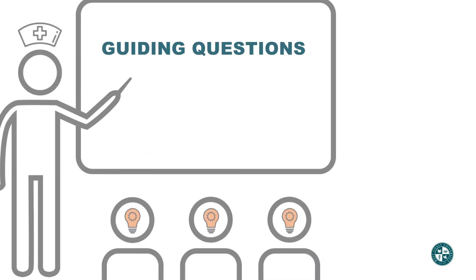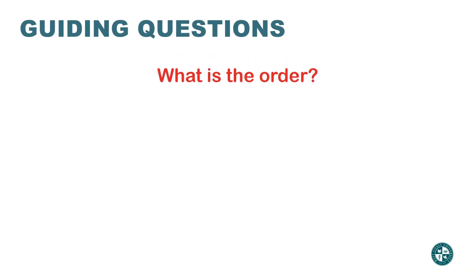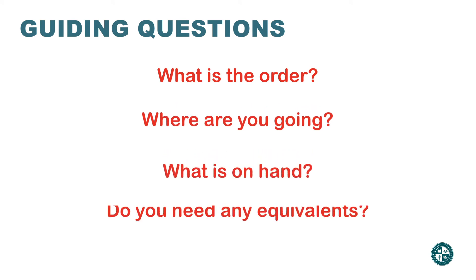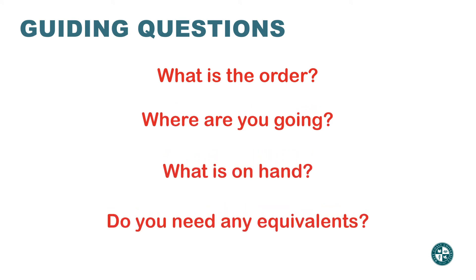The four questions are: What is the order? Where are you going? What is on hand? Do you need any equivalence? These questions are the same questions used previously to guide setting up the dimensional analysis.